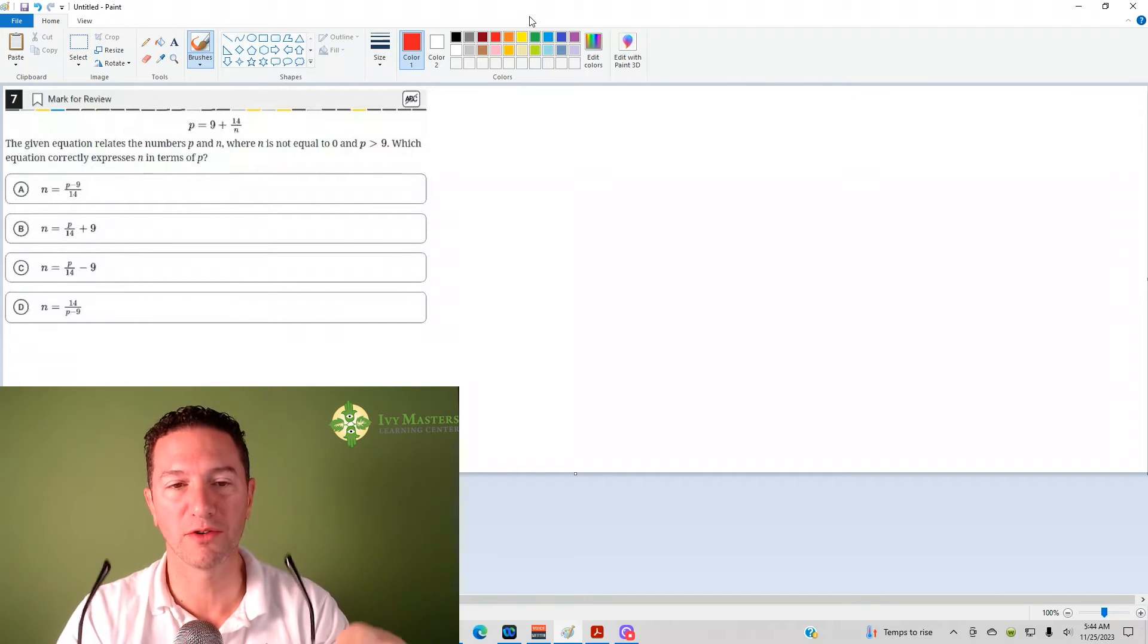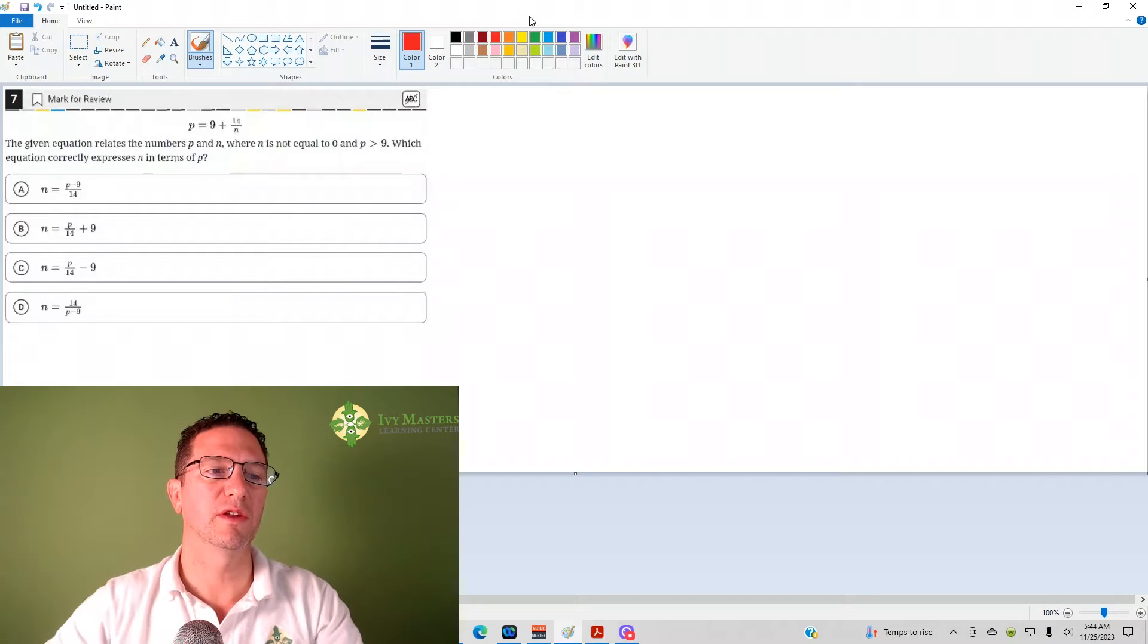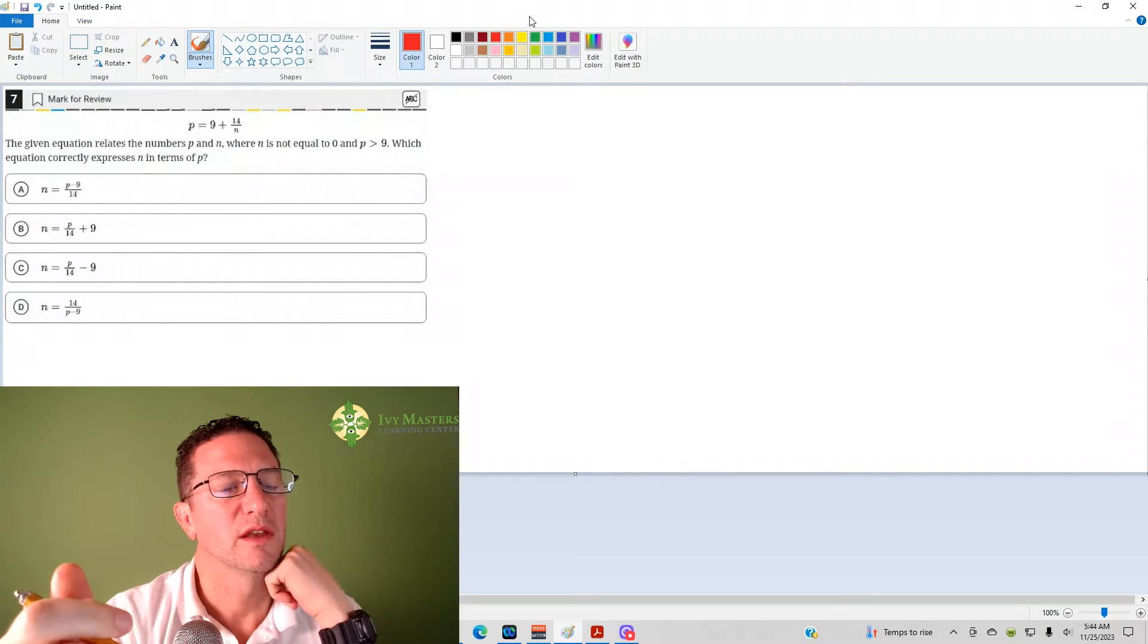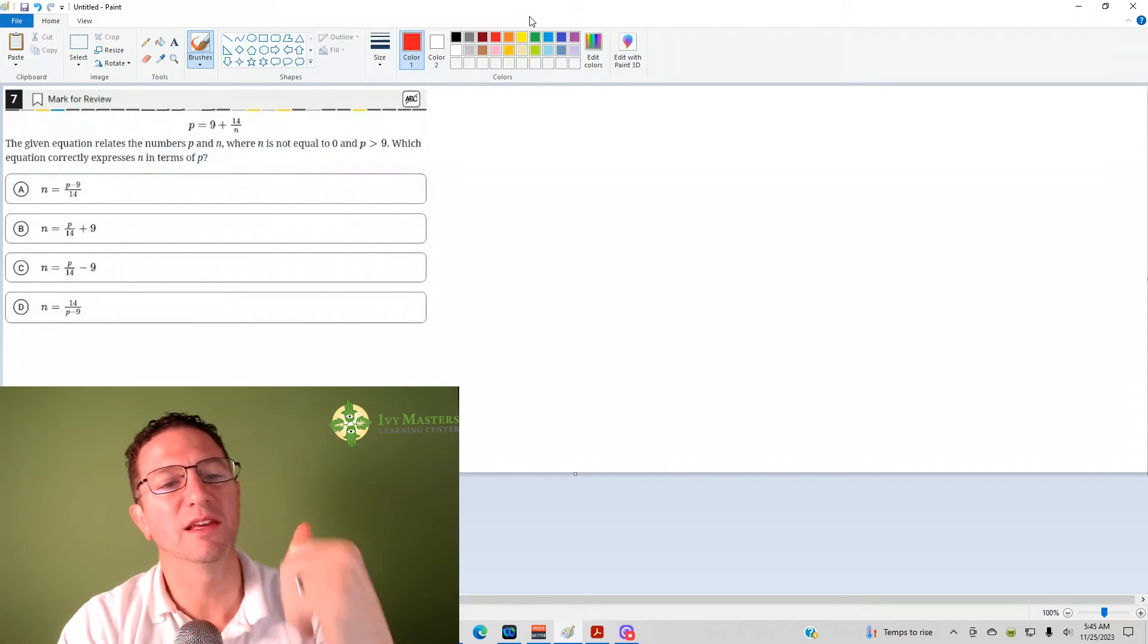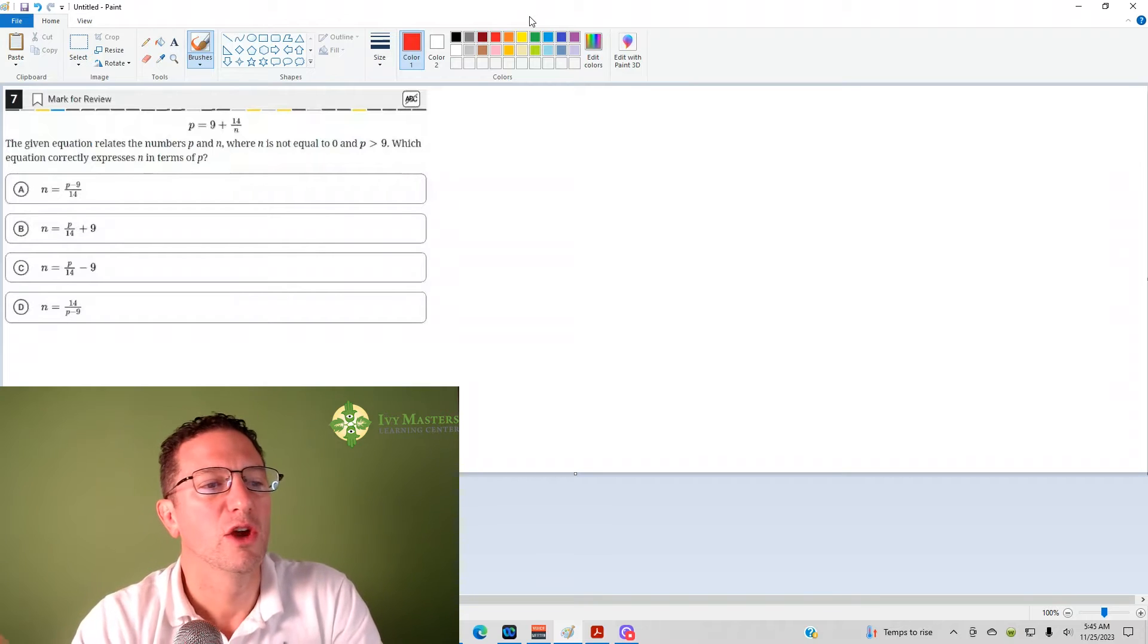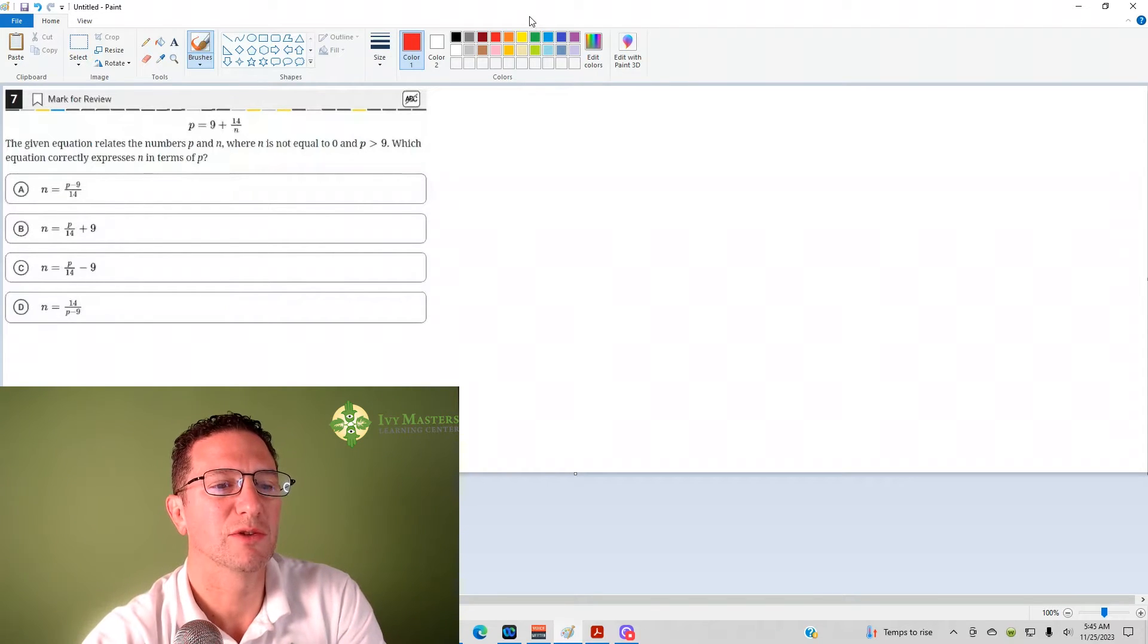This is from the hardest category of math questions. Number seven reads: when given the equation that relates the numbers p and n where n is not equal to zero and p is greater than nine, which equation correctly expresses n in terms of p?